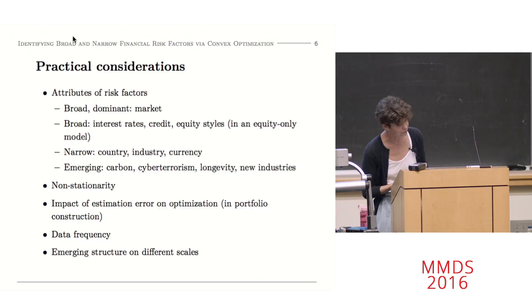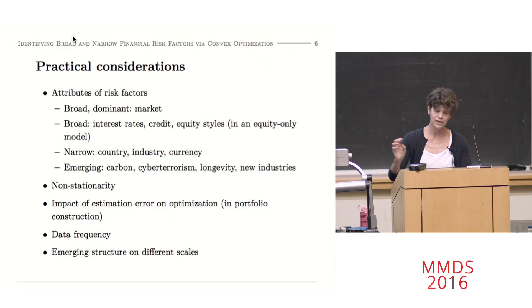One of the reasons why it's hard to get your hands around all these risk factors is because they have personalities. So Dacheng mentioned some of them. Of course, the broad dominant market factor, which is not just something that affects every asset or most every asset, which it does. It affects it in a positive way. Most assets are positively exposed to the market. So it's both a broad factor and a predominantly positive factor. Other broad factors, you were hearing about equity styles like momentum or value or size or these things.